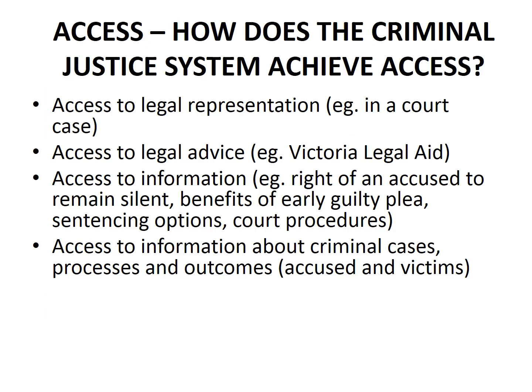This slide sets out the various ways in which the criminal justice system tries to achieve access. As with the previous slides on fairness and equality, you need to be able to explain how two or three of these ways achieve access to the criminal justice system. First, there's access to legal representation. An accused who faces a hearing or a trial before a court is entitled to be represented by a lawyer. And if you can't afford a lawyer, it may well be that you qualify for legal aid, where the government through Victorian Legal Aid gives you funds so that you can employ a lawyer to represent you.